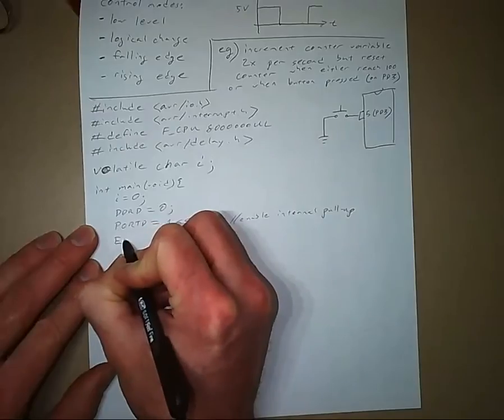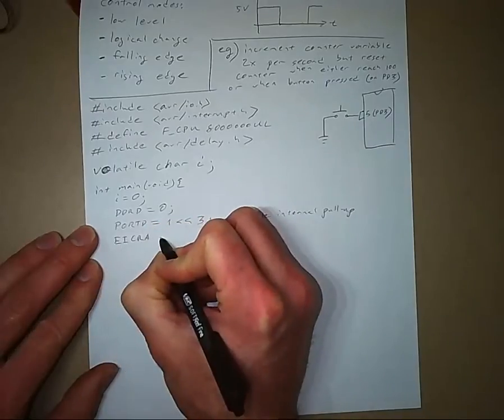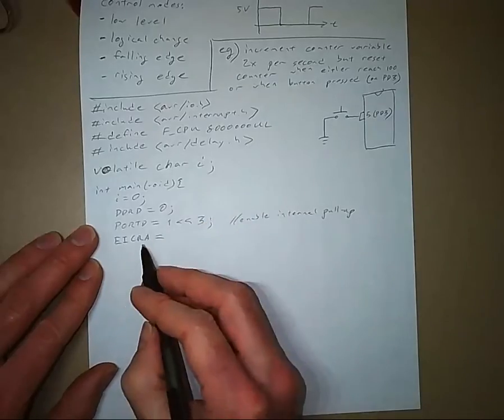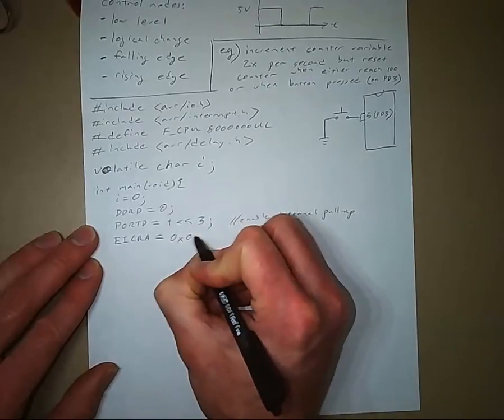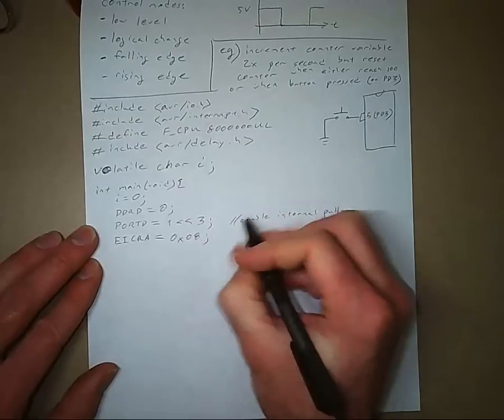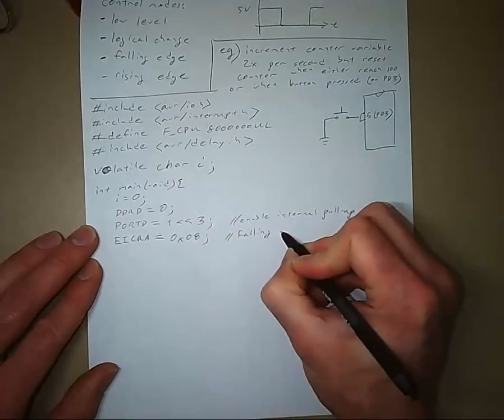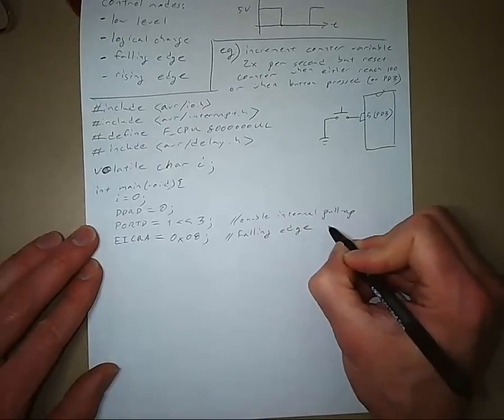And now we can go ahead and set up our interrupts for that external interrupt. And we'll write to EICRA, external interrupt control register A. And we're going to give that a value hex 0x08. And this is to get an interrupt on falling edges on the INT1 pin.